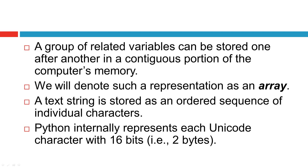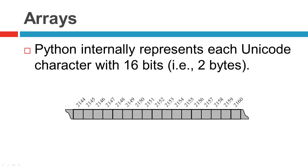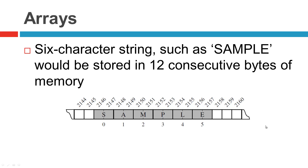A group of related variables can be stored one after another in a contiguous portion of the computer's memory, and we denote that representation as an array. A tangible example is a text string stored as an ordered sequence of individual characters. Python internally represents each Unicode character with 16 bits, or two bytes, per character. So for a six-character string such as 'sample', it would be stored in 12 consecutive bytes of memory, since each Unicode character takes two bytes (two times eight equals 16 bits).